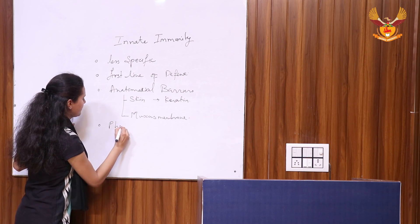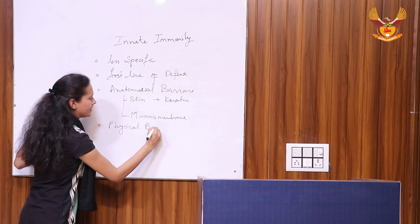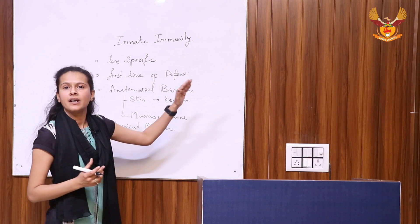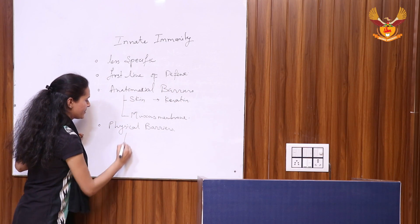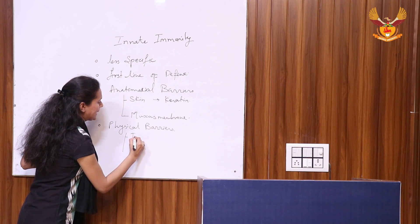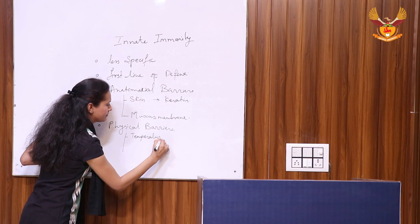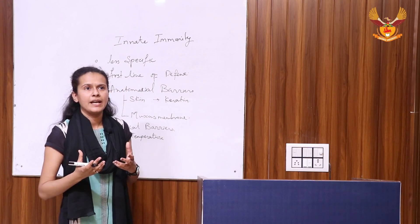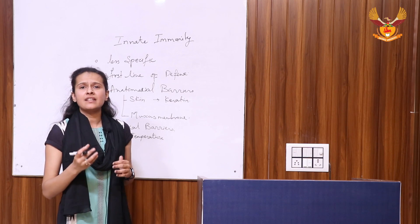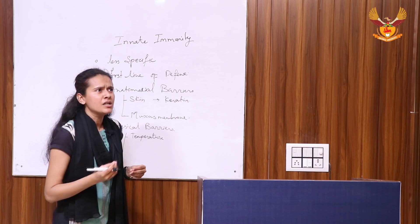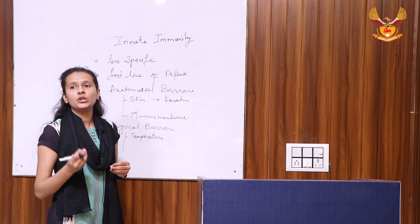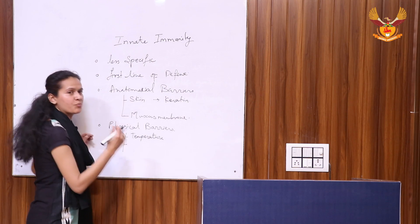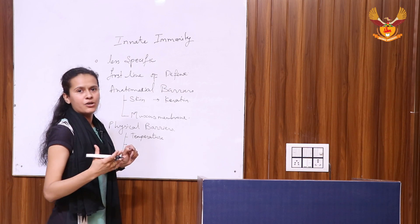The second is physical barriers. Under physical barriers, the first is temperature. Our normal body temperature, as well as high temperature — meaning fever — prevents most pathogens from being able to grow and survive. So our body temperature protects us from microorganisms.